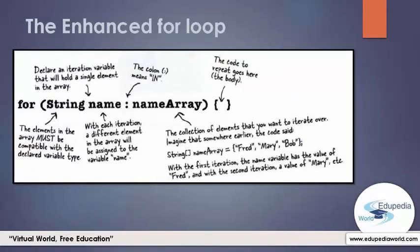The enhanced for loop makes it easier to iterate over all the elements in an array. We declare a variable compatible with the array we need to iterate — here we declare a string type variable called the iteration variable, which will hold a single element in the array. The name array mentioned here is a string type array, so both the array data type and the iteration variable data type are compatible. With the first iteration the name variable has the value 'Fred', with the second iteration 'Mary', and in the third, which is the last iteration, it will have the value 'Bob'.